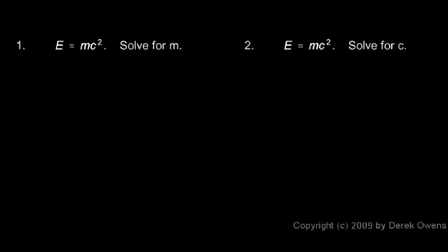In these first two examples, we have the formula E equals MC squared. This is Albert Einstein's famous equation for energy. E in this equation is energy, M is mass, and C is the speed of light.